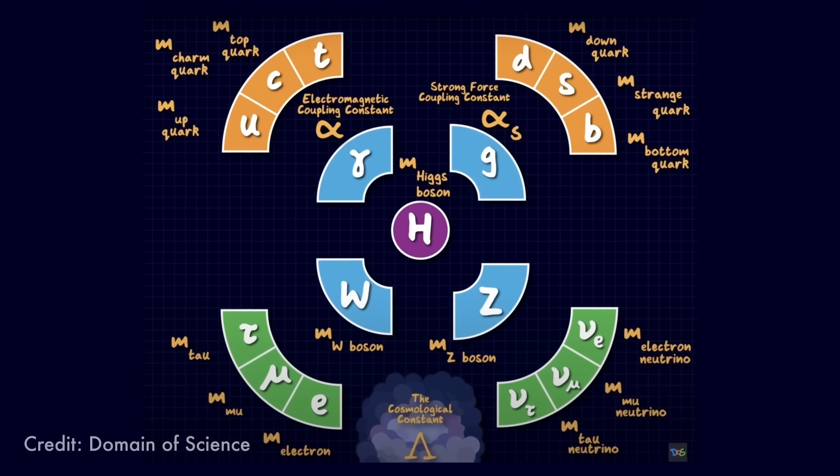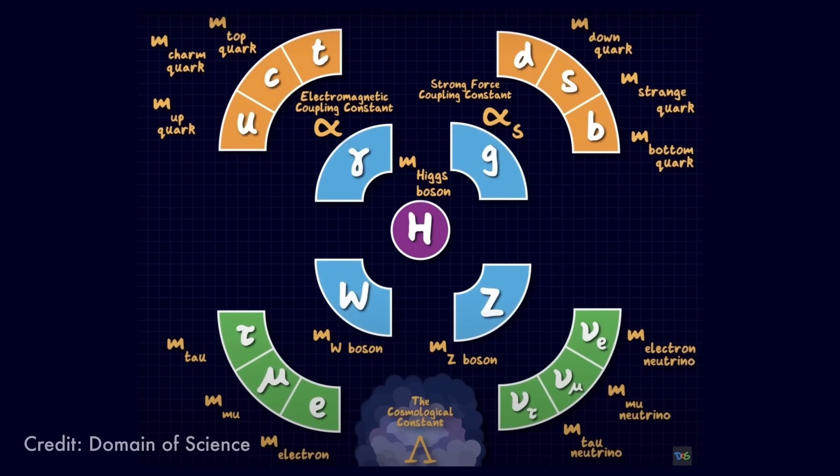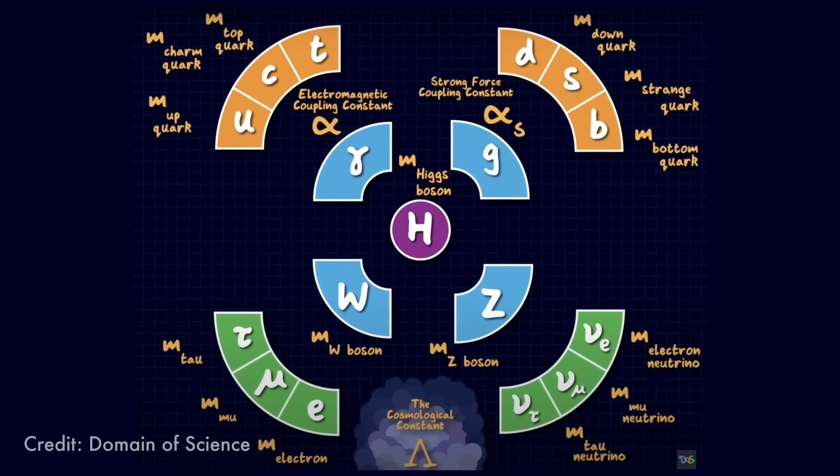Physicists have boiled down the fundamental constants that shape our universe to just 26 numbers. Our current theory of known matter, the standard model, treats these numbers as unchanging in both space and time. The funny thing about fundamental constants is that they can't be predicted from theory. That's what makes them, well, fundamental.